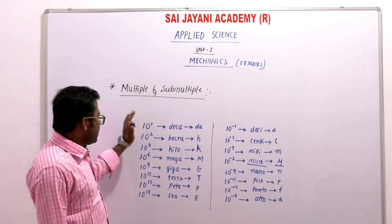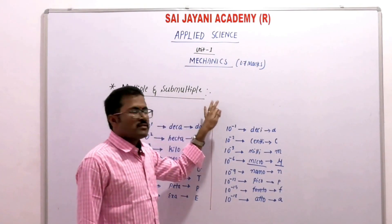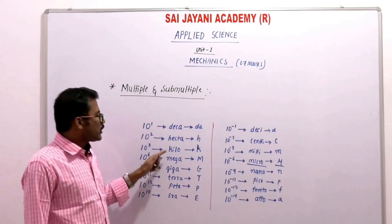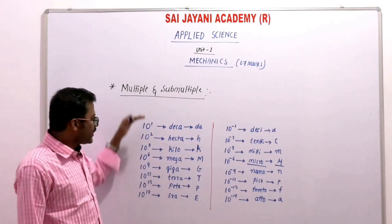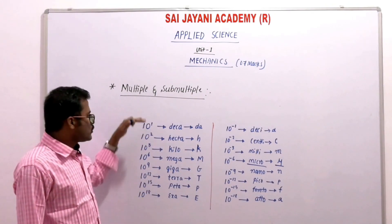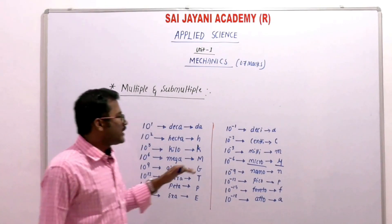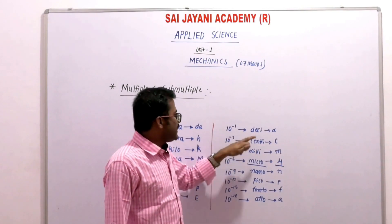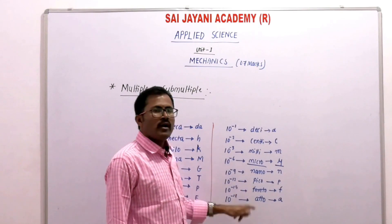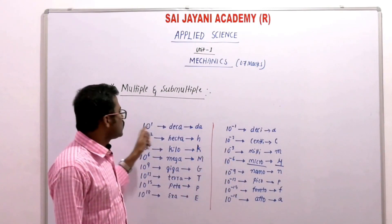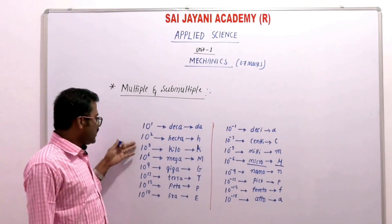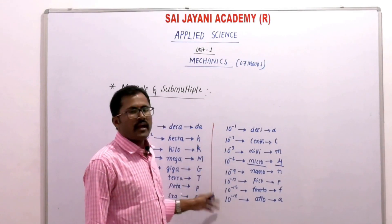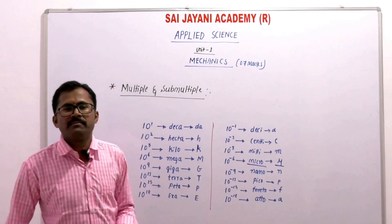So these are the multiples for larger values and submultiples for smaller values. The positive prefixes are: deca, hecto, kilo, mega, giga, tera, peta, exa — for positive powers of 10. For negative powers, the prefixes are: deci, centi, milli, micro, nano, pico, femto, atto — corresponding to powers minus 1, 2, 3, 6, 9, 12, 15, 18. These are the multiples and submultiples.